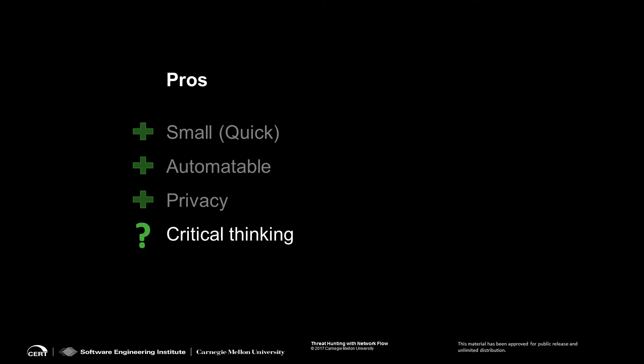Another reason I like network flow — and some of you may disagree — is that it forces analysts to use their critical thinking skills. If you don't have an IDS telling you what happened, and you don't have PCAP to look through for a story, you have to make an interpretation based on your experience and foundational knowledge of networks. You might say that's not good — I want even my most inexperienced analyst to be able to do this. But the easy queries, like looking up an IP address, can be automated. I'm talking about the type of analysis where you have to understand and explain what happened during an event — who, what, where, why, when, and how — and make recommendations on how to mitigate it in the future.